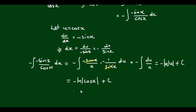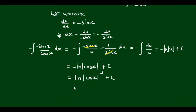I can also write this using my log laws as ln of the absolute value of cos(x) to the negative one, which is equal to ln of 1 divided by cos(x), and that's equal to ln of sec(x).